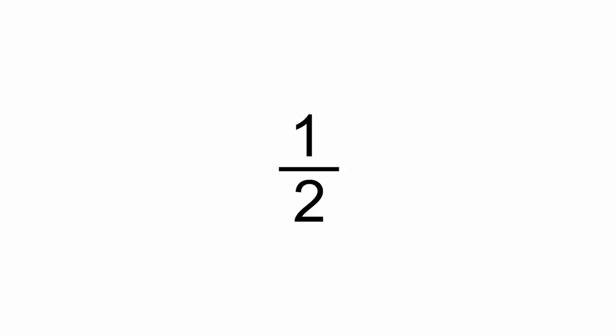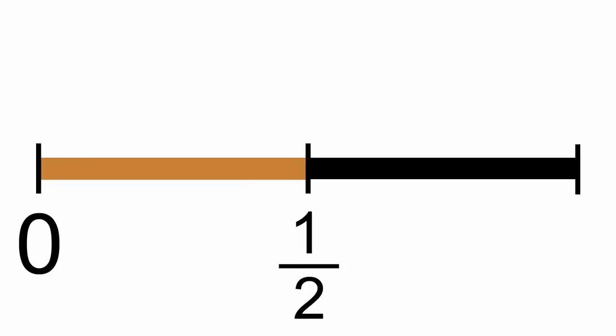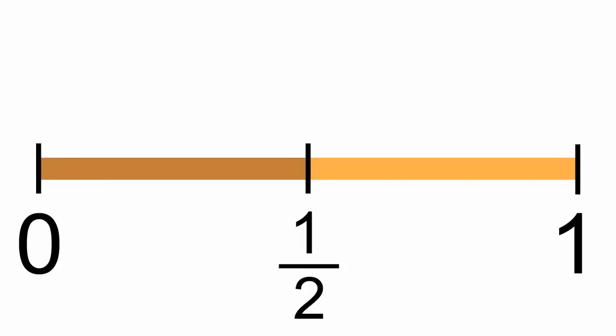Let's start with an empty number line again, going from 0 to 1. Let's divide it into two even pieces. 0, 1 half, 1. Also known as two halves. Here's the location of 1 half.